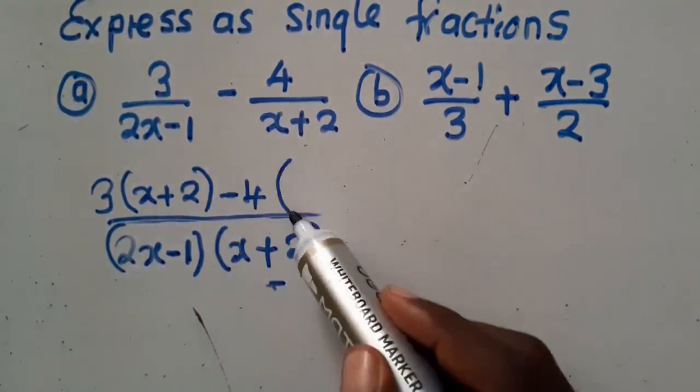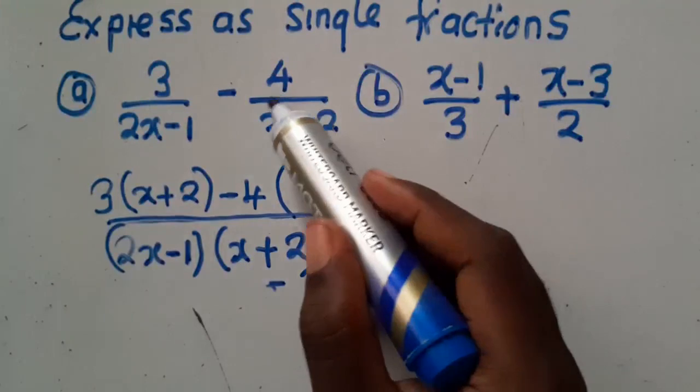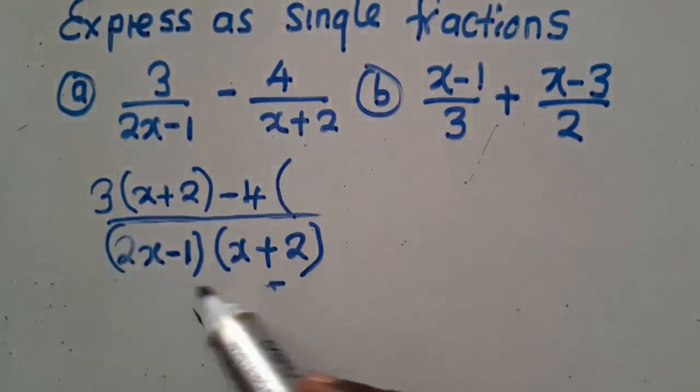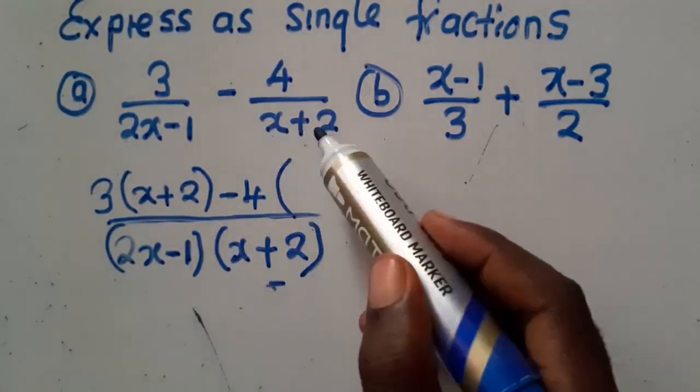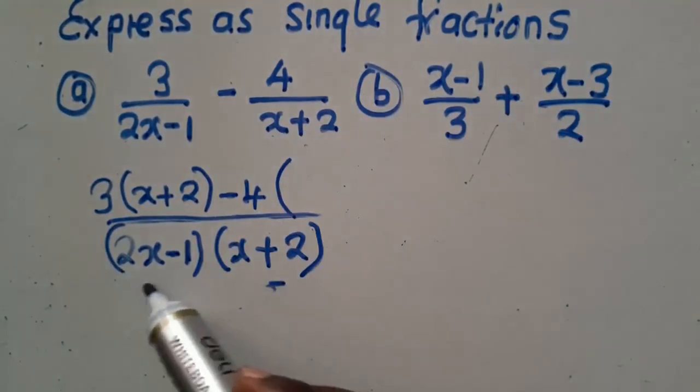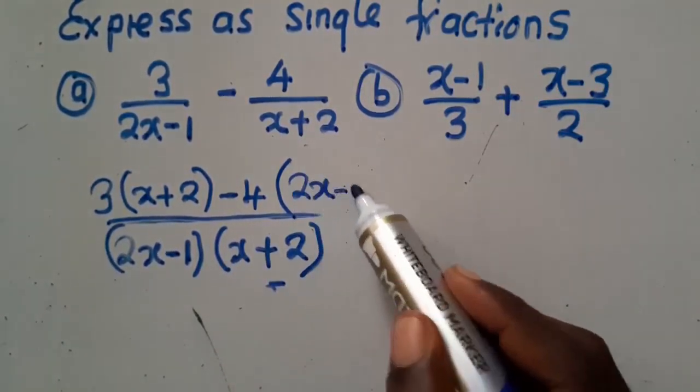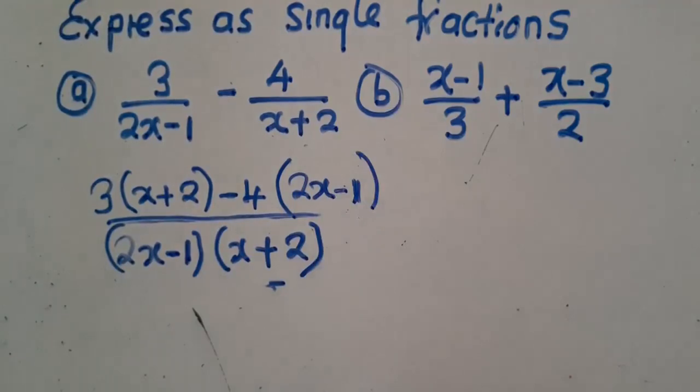You know that x plus 2 into these two. x plus 2 comes out. You are going to multiply with this, which is 2x minus 1. This is what you need to do.